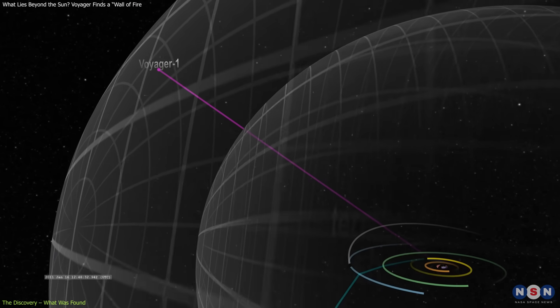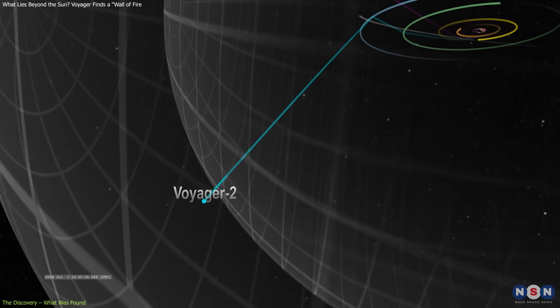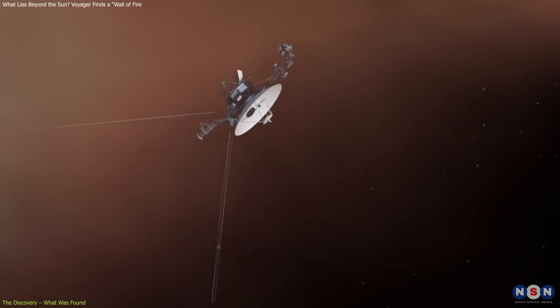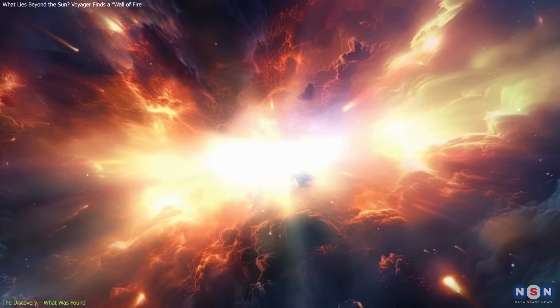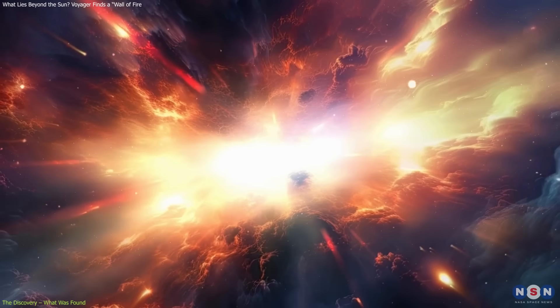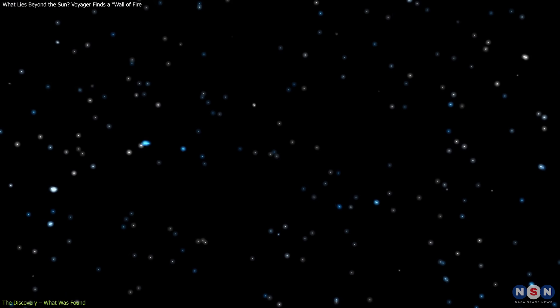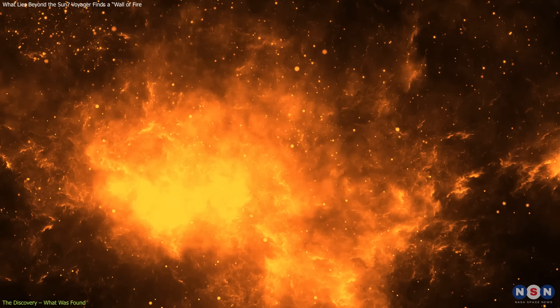Voyager 1 crossed this boundary in 2012, followed by Voyager 2 in 2018. Instead of a simple change in particle flow, both probes recorded a narrow zone of plasma with temperatures between 30,000 and 50,000 Kelvin, about 54,000 to 90,000 degrees Fahrenheit. It isn't a wall in any physical sense, nor is it burning. The particle density here is incredibly low, far less than even the best vacuums we create on Earth, so heat doesn't behave the way it does in our environment.